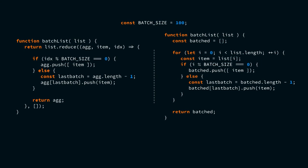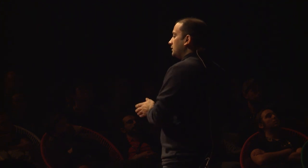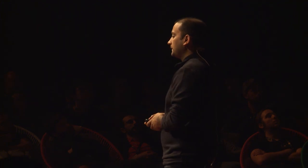You see two routines that both do the same thing. The one on your left uses reduce, and the one on the right does the same thing with a classical for loop. We are breaking that large array into chunks of smaller hundred-item ones.